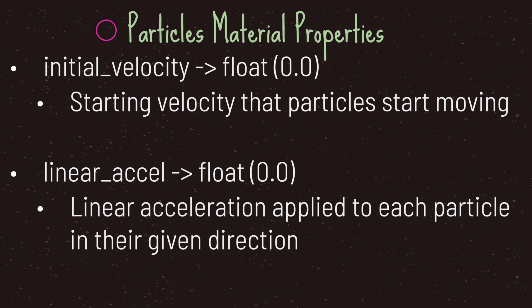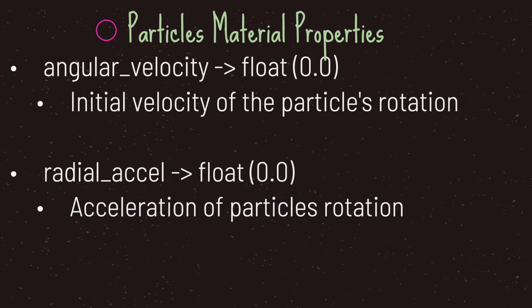You also have values that affect velocity and acceleration. The initial velocity property is the starting velocity that particles begin moving at — by default it's set to zero, so particles won't move on their own, but gravity will still cause them to fall downward. The linear acceleration property applies an acceleration to each particle in their given direction. The angular velocity property is the initial velocity of the particle's rotation, and the radial acceleration property is the acceleration of a particle's rotation. Both of these values are set to zero.